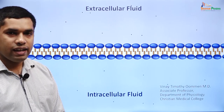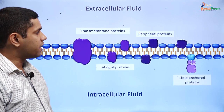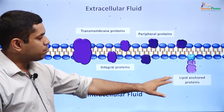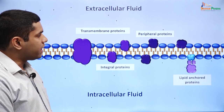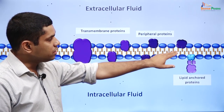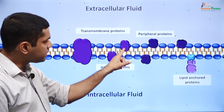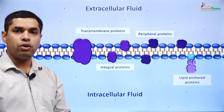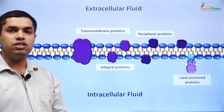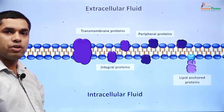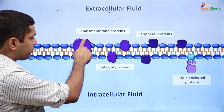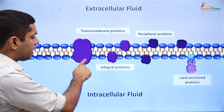Let's look at one way of classifying proteins that are present on the cell membrane. Proteins can be classified either as peripheral proteins, integral proteins, or lipid anchored proteins. Peripheral proteins do not extend into the hydrophobic core of the membrane, whereas integral proteins extend into the hydrophobic core. A particular type of integral protein is a transmembrane protein, which extends across both layers of the cell membrane, spanning the outer layer as well as the inner layer.